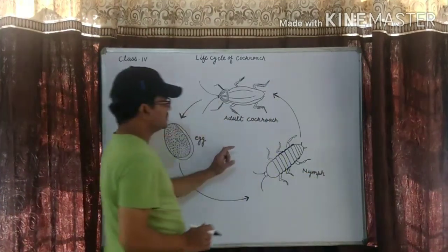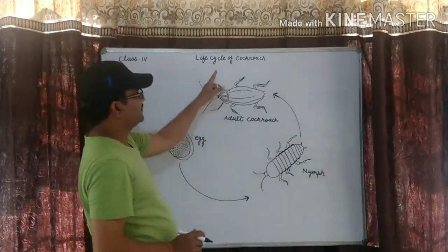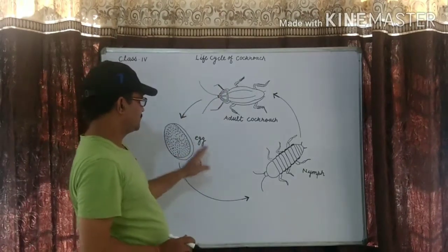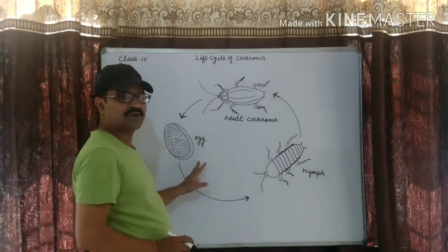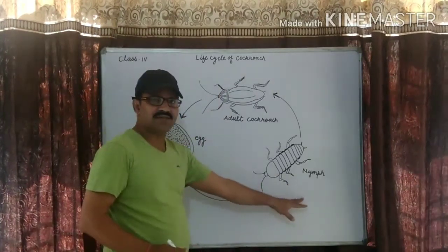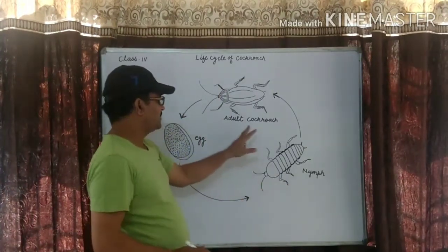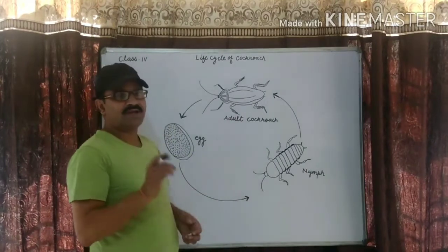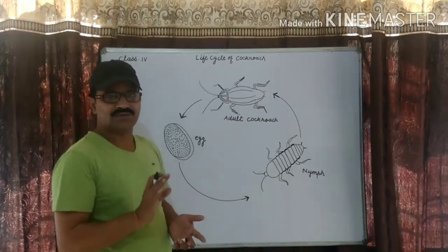There are 3 stages in the life cycle of the cockroach. Number 1 is egg. The 2nd is nymph. And the 3rd stage is adult cockroach.